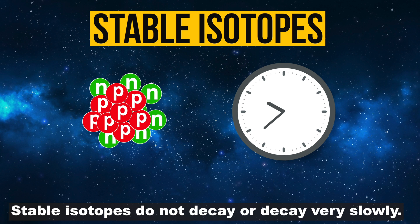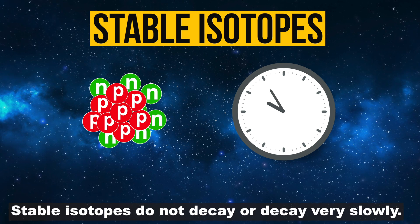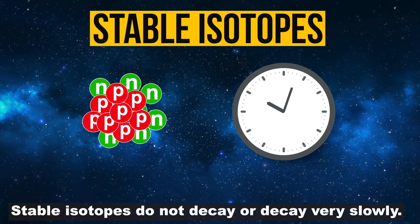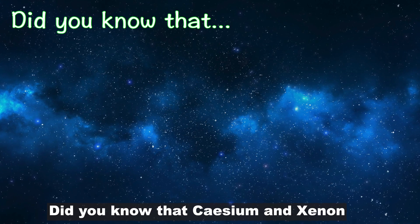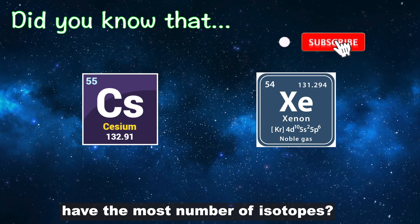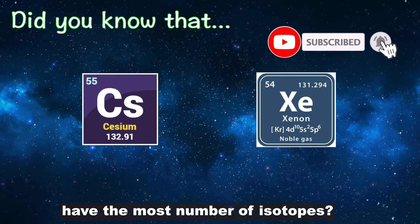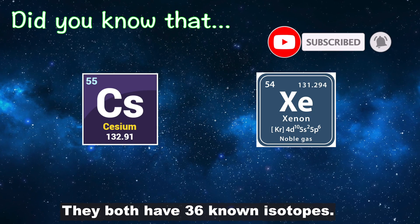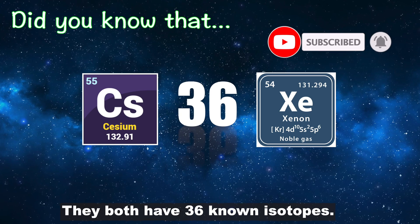Stable isotopes do not decay, or decay very slowly. Did you know that cesium and xenon have the most number of isotopes? They both have 36 known isotopes.